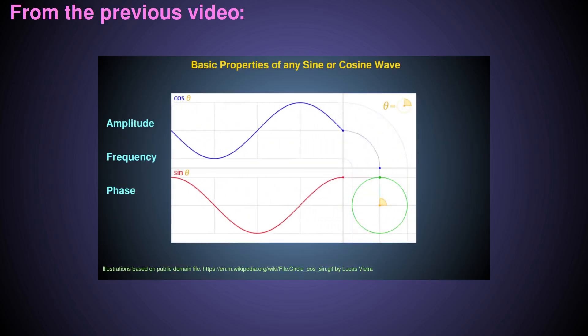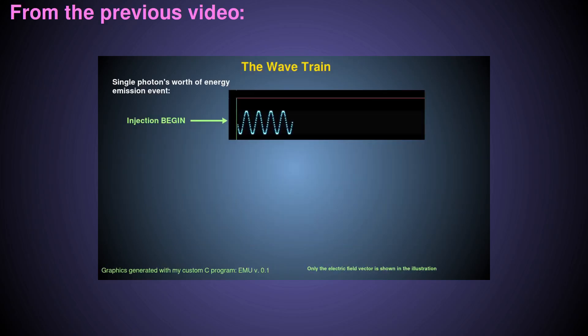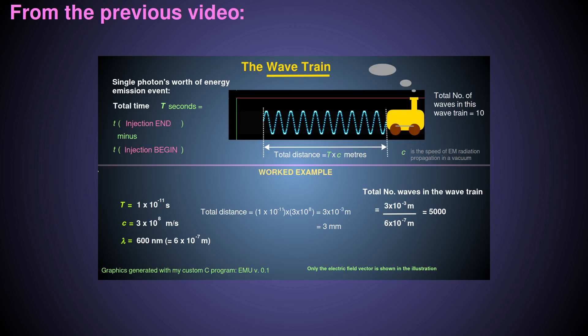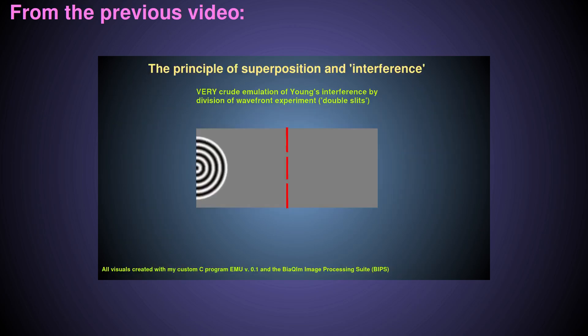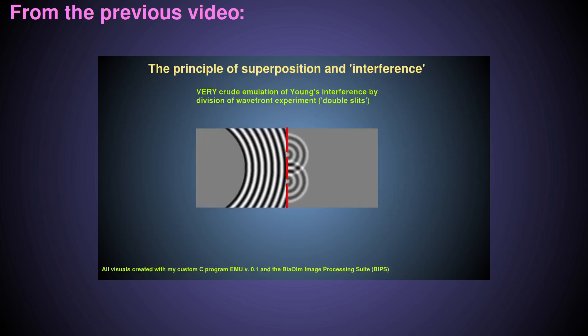In my previous videos, I discussed some basic properties of EM waves, including the concepts of a wave train, the principle of superposition, and interference.